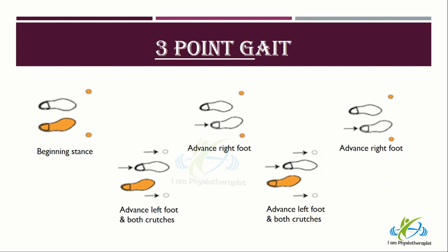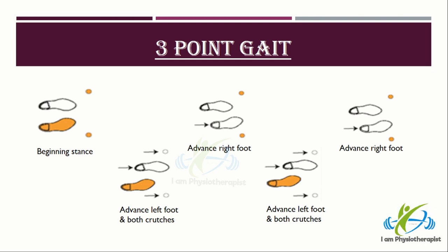Three-point gait pattern: this pattern is used when the patient is only able to bear full weight on one lower extremity. In three-point gait, both crutches and the affected leg are advanced together, and then the normal leg is moved forward.